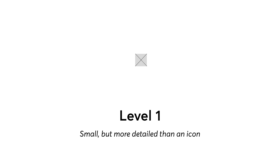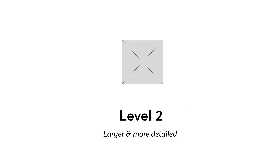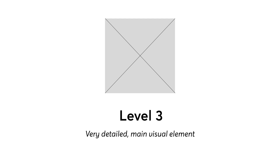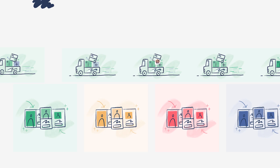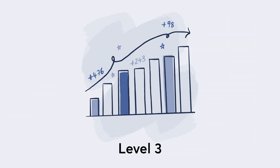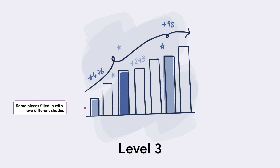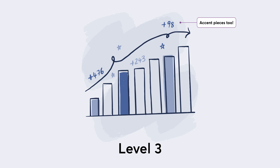We settled on creating three levels of illustration. Level one would be just a bit bigger than an icon, usually to anchor some text. Level two would be larger with a bit more detail. Level three would be larger and even more detailed — designed to be the main visual element on a page. Our level three illustrations use a textured navy pen, giving nice variation in line weight that feels like it was drawn with a marker, with some pieces filled in using our 500 and 300 level colors, plus a watercolor squiggle in the background.